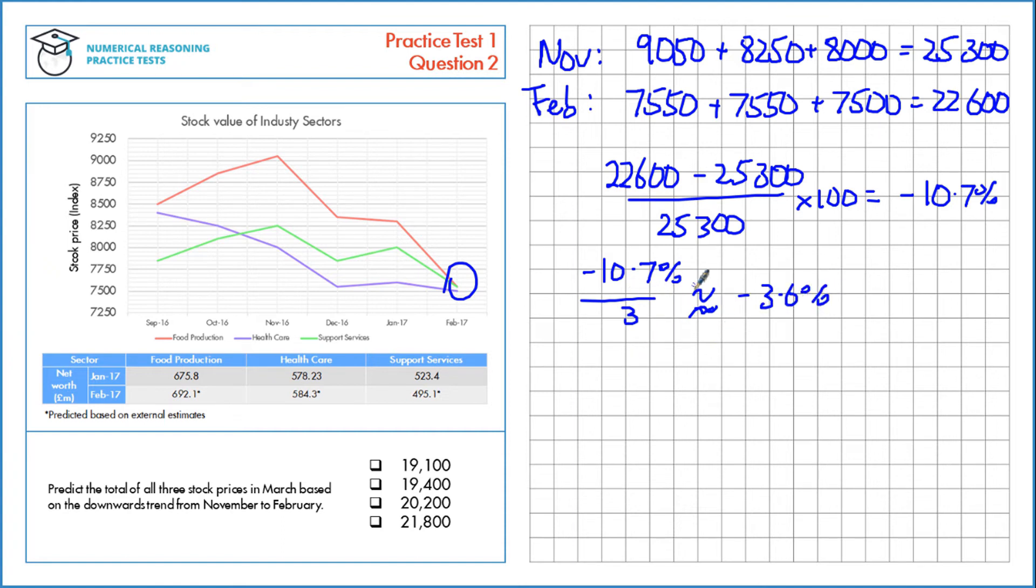It's not super accurate but it's a decent enough estimate. So if we're decreasing by 3.6% per month, that's 100% take away 3.6%, we'll be left with 96.4% or 0.964.